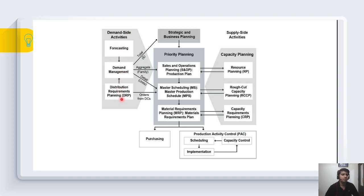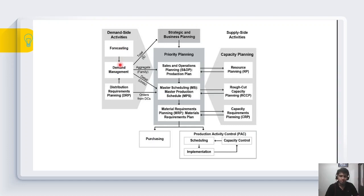The second input to demand management is DRP — Distribution Requirements Planning. DRP gets exact requirements from distribution centers, retailers, or customers, and checks how much inventory needs to be replenished and how much has already been sold. For example, if a customer always needs 1,000 units but only has 500 units in inventory, DRP creates a demand for 500 units. Forecast input, based on historical trends, seasonality, and cyclic demand, is also fed into demand management.